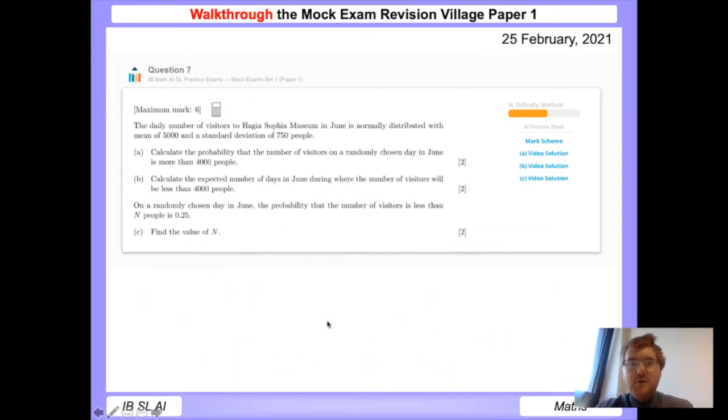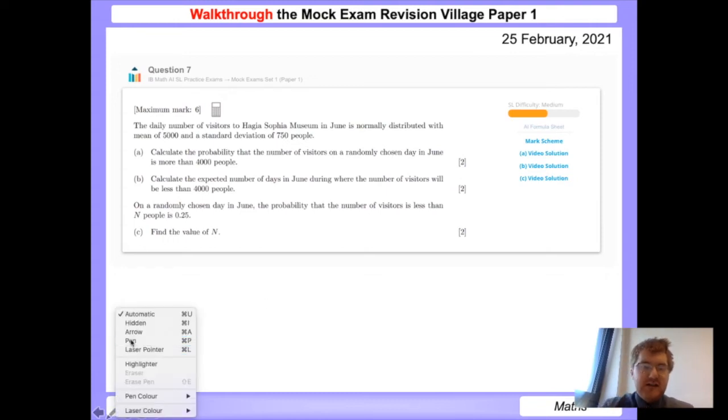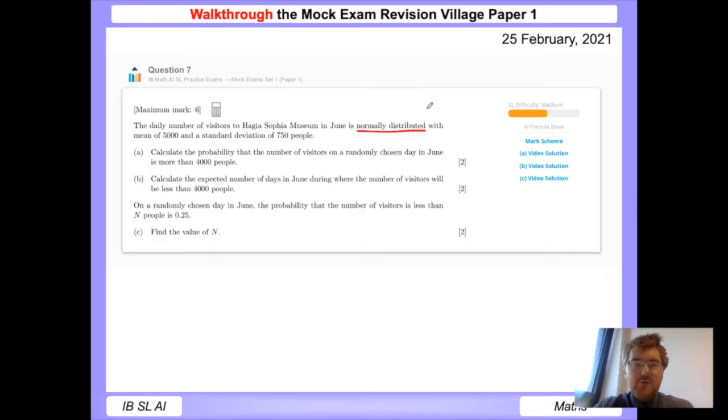On to question seven. This is a normal distribution question. As soon as we see normally distributed in the question, we know we're using our GDC. The daily number of visitors to Hagia Sophia Museum in June is normally distributed with mean of 5,000 and a standard deviation of 750 people. So our mu is 5,000 and our sigma is 750.